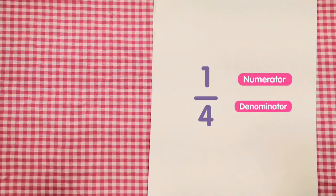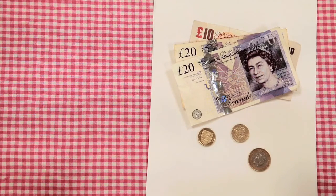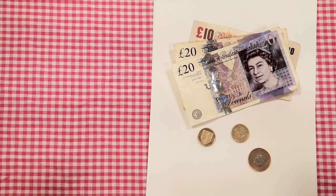Let's try a question. Pries has £54. He spent three quarters of his money. How much money does he have left?